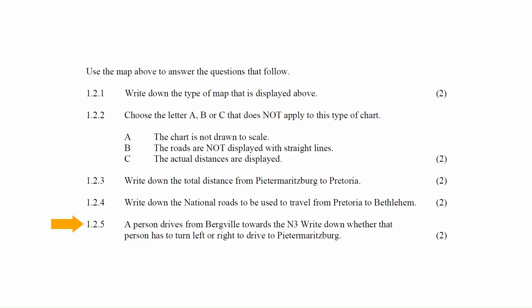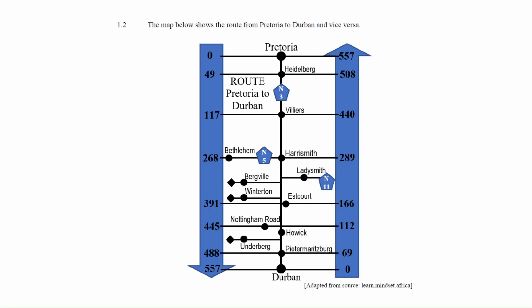In question 1.2.5 it is stated that a person drives from Bergville towards the N3. You will have to write down whether this person has to turn left or right to drive to Pietermaritzburg. Looking at the strip chart, Bergville is located on the chart and if the person drives from Bergville to the N3, at the N3 he or she will have to make a right turn towards Pietermaritzburg.